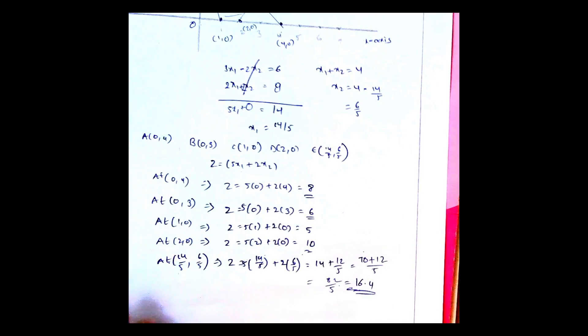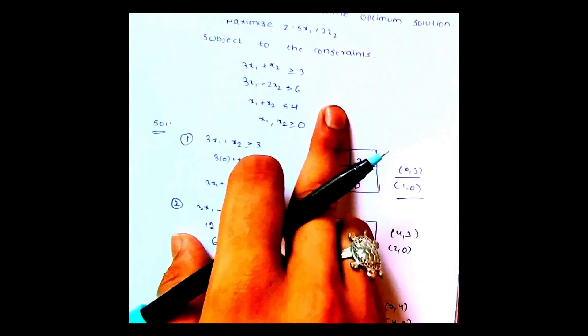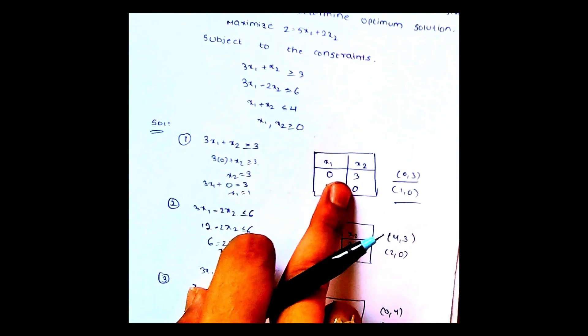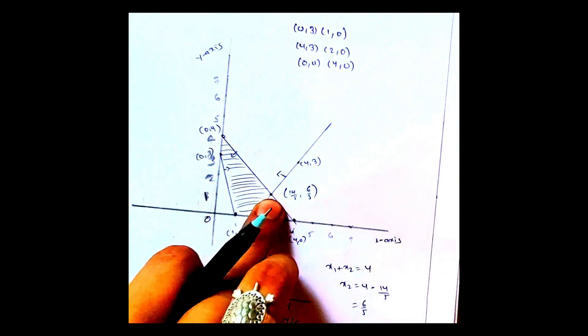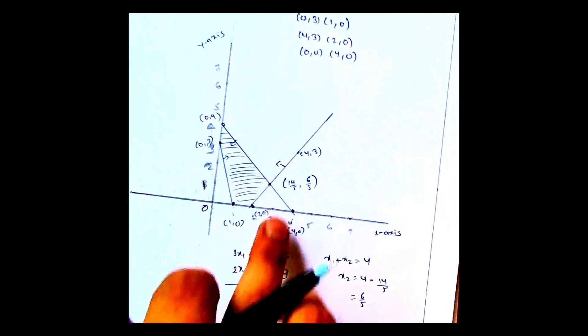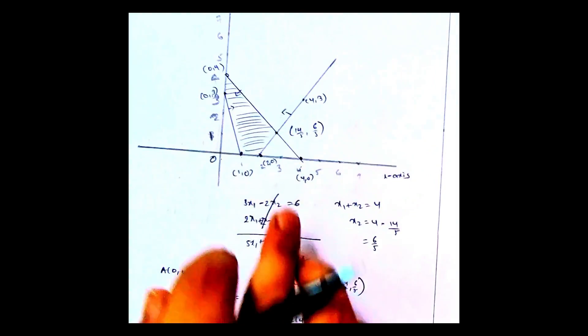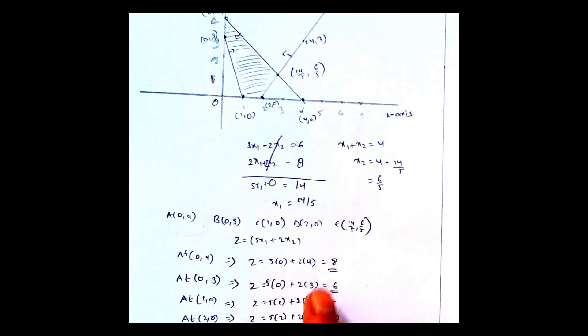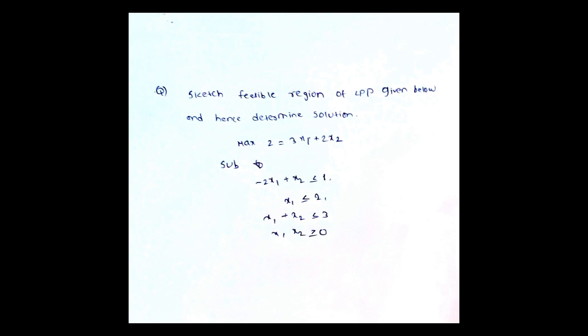To summarize what we have done: we read the problem and took the equations. After taking the equations, we found the graph, found the intersection point, identified the feasible region, took the feasible points, and substituted them in the main equation. We have completed the graphical LP model question.